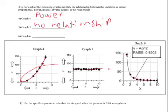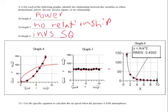Now look at graph 6. When we look at graph 6, what we notice is we have this downward swoop. Now this downward swoop could either be inverse or inverse squared. If we look here, we see the equation begins with y equals a over x squared, so this is an inverse square relationship.